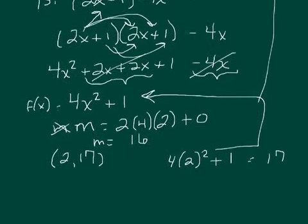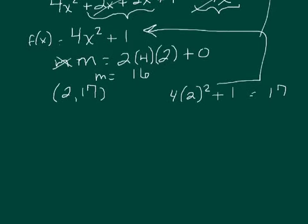Let me scoot these things up. Okay, so we need the equation of the line. y minus, oh I should have used yellow all along, that would have been so much prettier. y minus 17 equals, where's my slope? The slope is 16 times x minus 2.